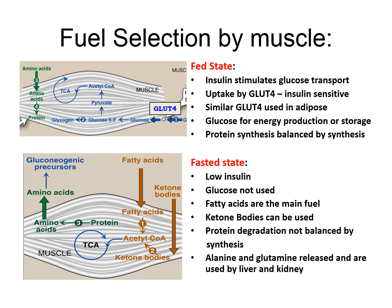During the fed state, insulin stimulates glucose uptake by the GLUT4 transporter, which is insulin-sensitive. Glucose uptake by your muscle is an insulin-dependent process — without insulin there will be no glucose uptake, the same as for adipose tissue. Most glucose is used for energy production while the remainder is converted into glycogen for storage, and you also get protein synthesis. For this reason, insulin is also known as a hormone with anabolic effects, stimulating the synthesis of macromolecules such as protein and glycogen.